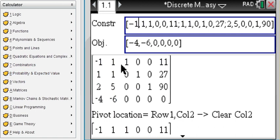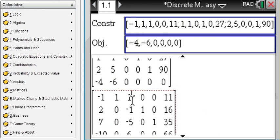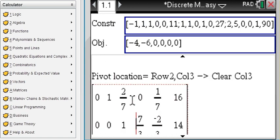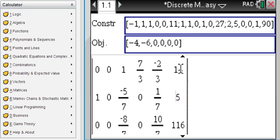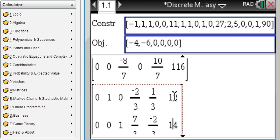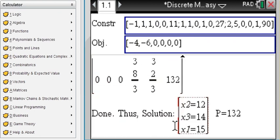initial setup of your simplex tableau and then you can observe how the pivot locations are located and how the columns are cleared until all columns are cleared and you arrive at the final tableau which has values 2, 12, 14 and 15 and which then yields a profit of 132.